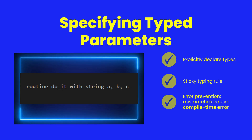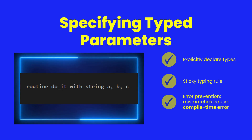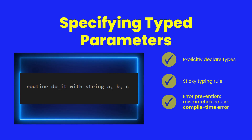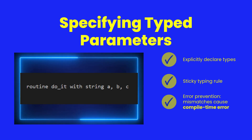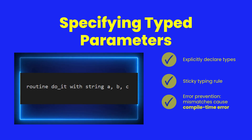Of course, you can declare types explicitly. Once you do, the type is sticky for all following parameters until you name another type. If you try to pass a mismatched type later, Shear Power stops you at compile time, saving you from nasty runtime surprises.